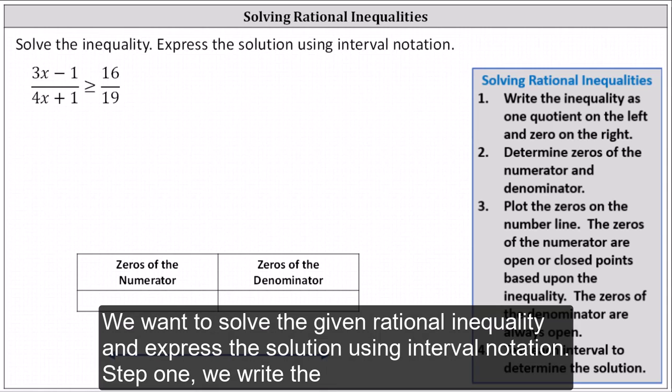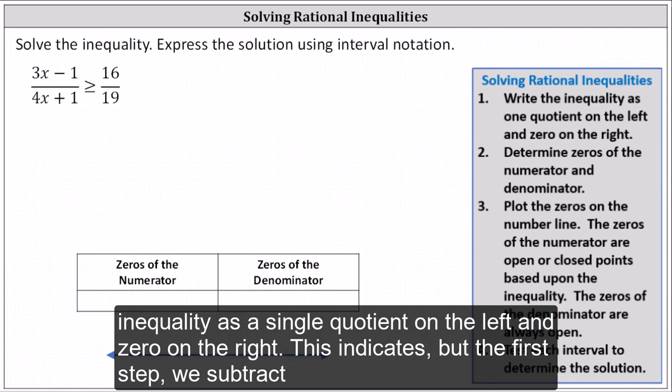We want to solve the given rational inequality and express the solution using interval notation. Step one, we write the inequality as a single quotient on the left and zero on the right.